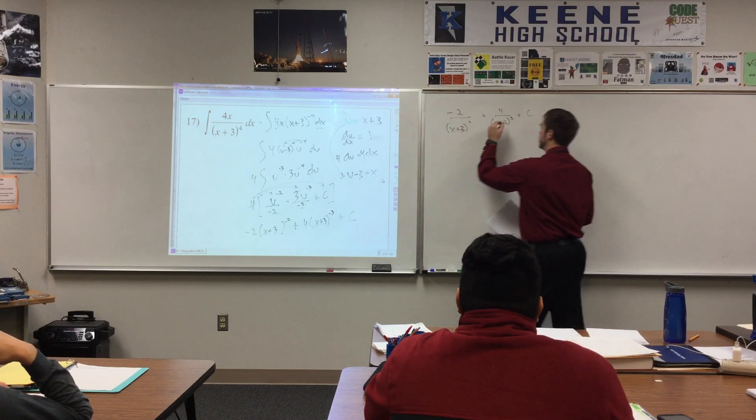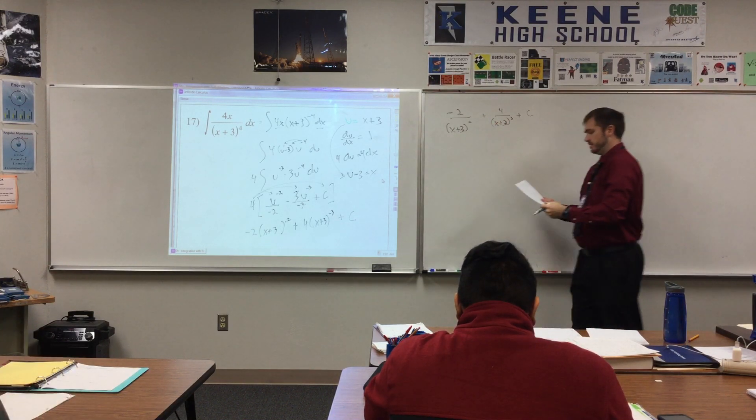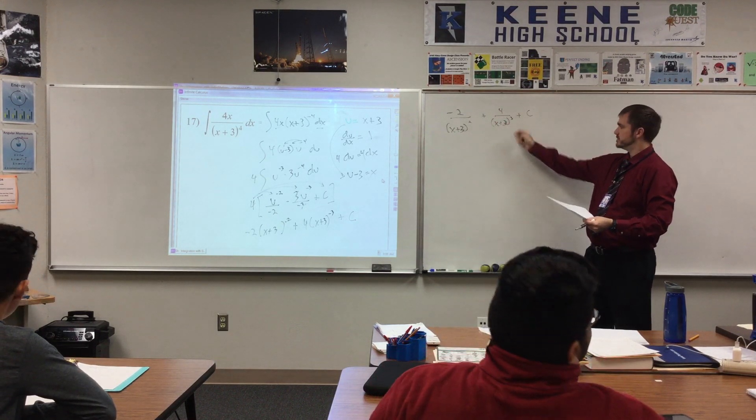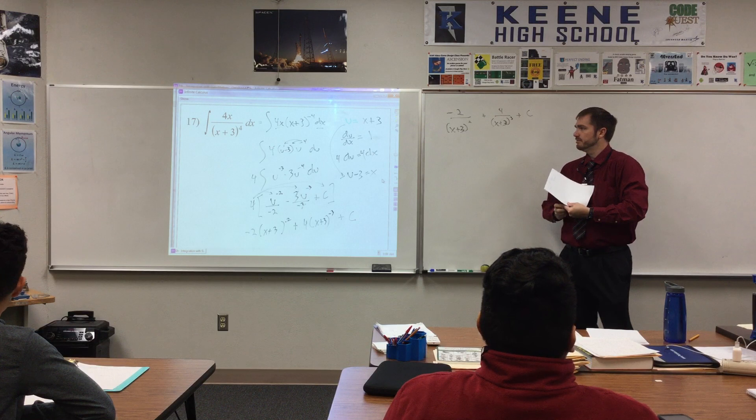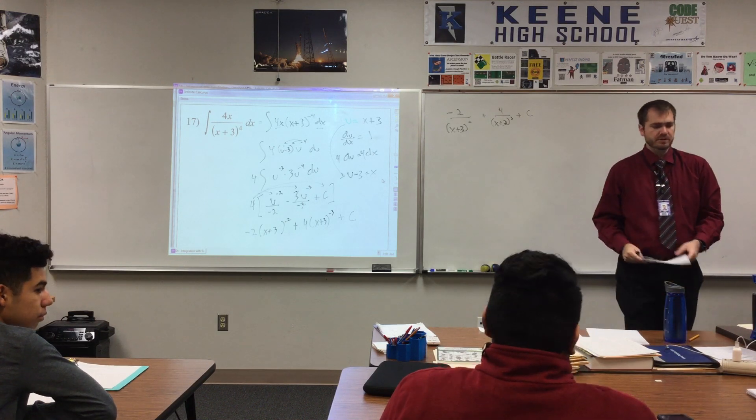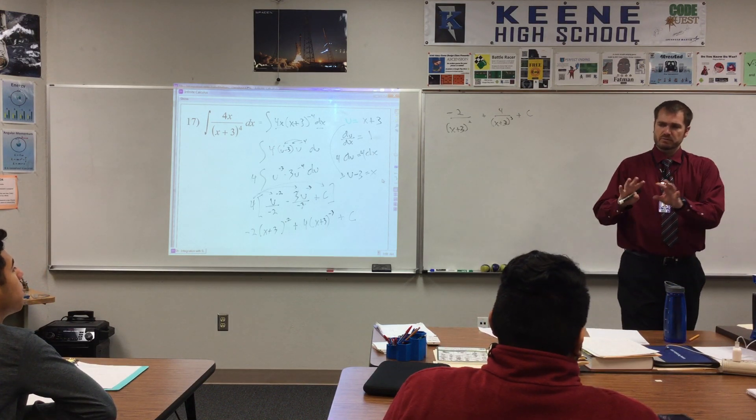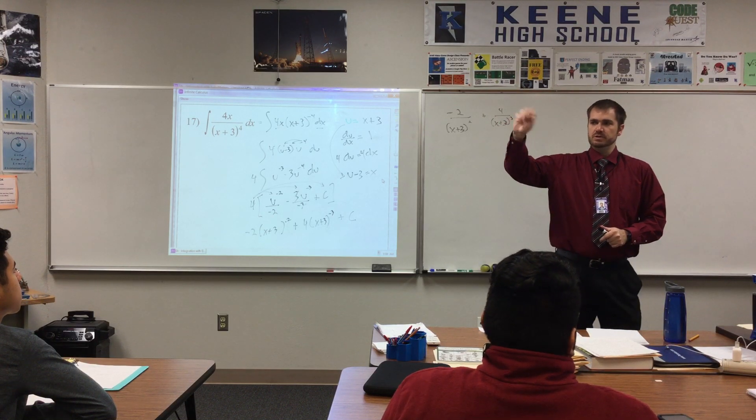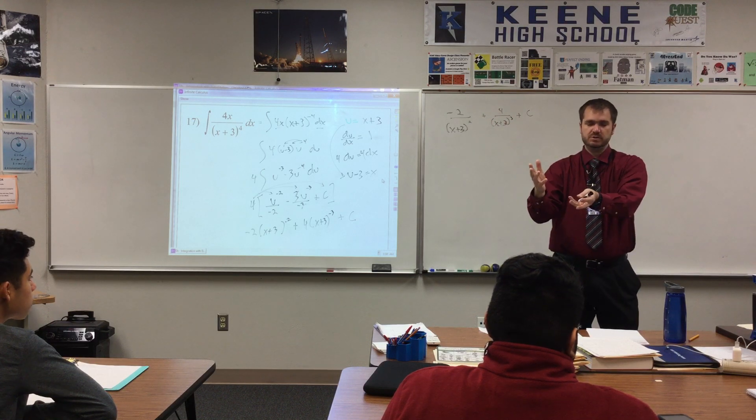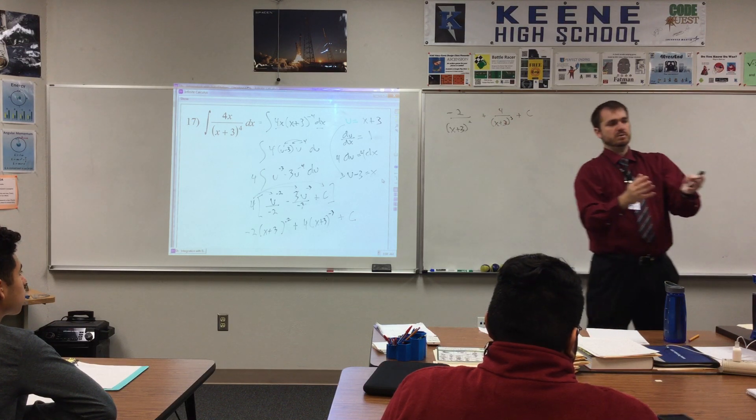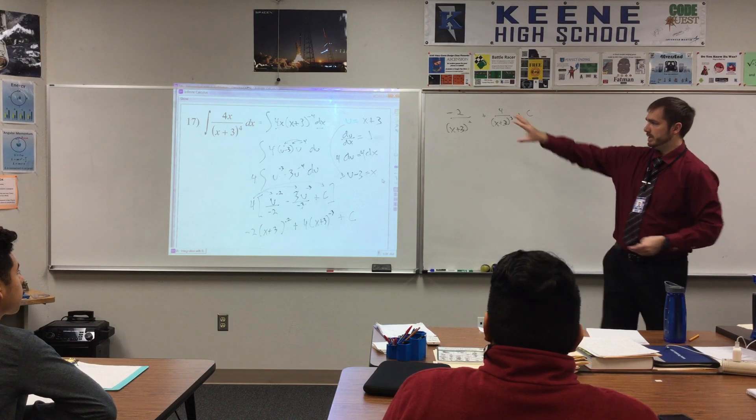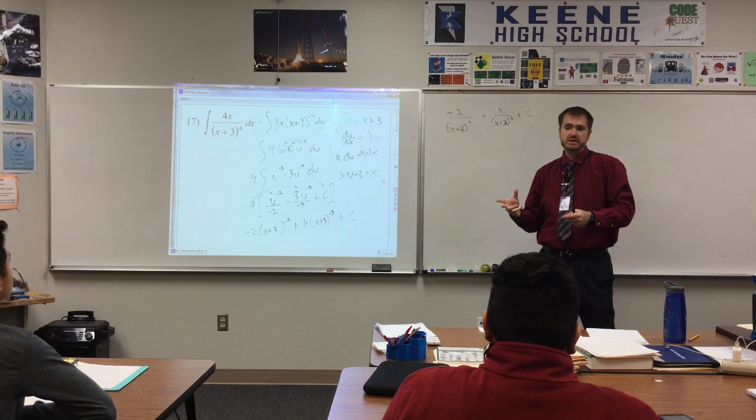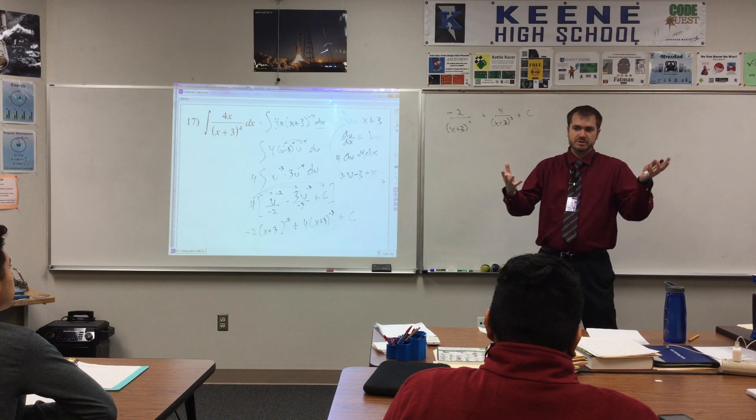Now, when we check our work I think the answer document is going to put all negative exponents into the denominator so it's going to probably have some like this negative 2 over x plus 2 squared plus 4 over x plus 2 cubed plus c. x plus 3 plus 3 plus 4, x plus 3 cubed plus 3.